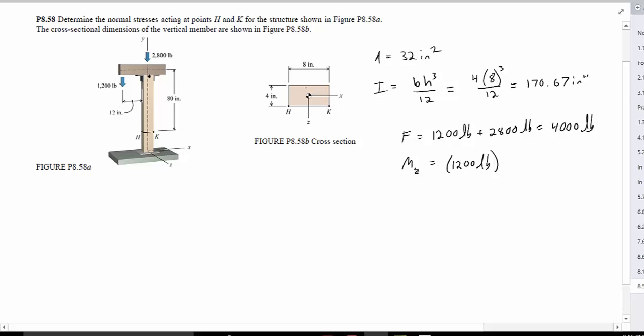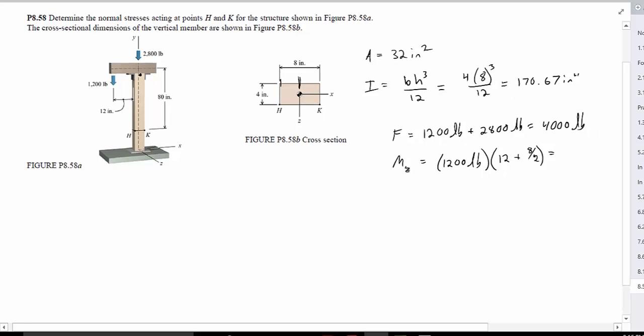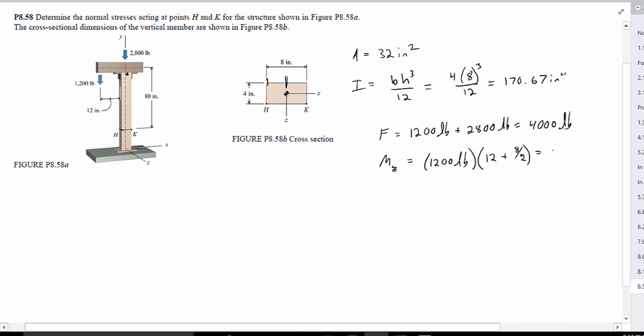But if it's from the outer edge, then from the centroid to this edge is 4 inches, so 12 plus half of that distance. So 12 plus that half of the 8, which is 4, and multiplying this out, we should get a value of moment equaling 19,200 pound inches.